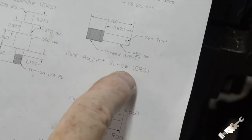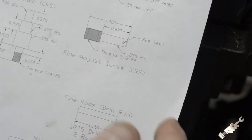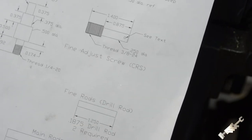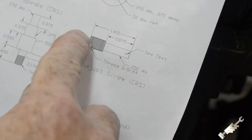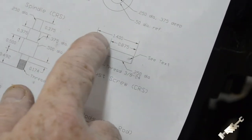Okay, I'm just going to make this fine adjustment screw today, and it says cold rolled steel. I have a piece of drill rod I'm going to use. So it's 3 eighths diameter. I'm going to start by marking off the overall length.